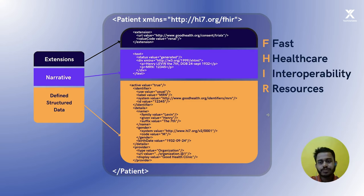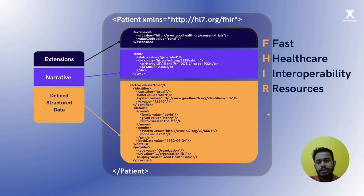In the extension part, if you want to include customized information that is not part of the resource itself, you can insert this information inside the extensions. You also have to provide the schema for your customized data inside the extension, so that others can parse this information by reading the extension part.